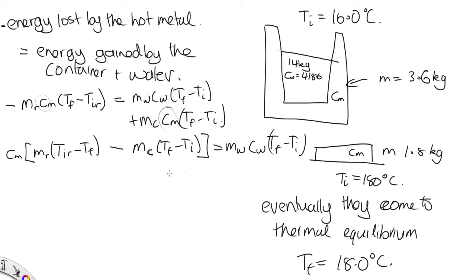Let's just substitute everything in now and divide. So Cm is equal to the mass of water. We've got 14 kilograms with a heat capacity 4,186. And the final temperature is 18, the initial temperature is 16. And we're dividing by this. The rod, the hunk of metal, has a mass of 1.8.